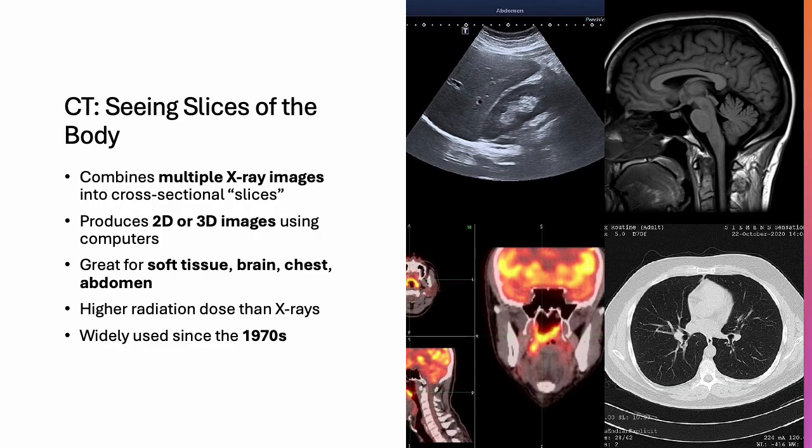CT scans revolutionized imaging by combining multiple X-rays into one detailed image — think of it like slicing a loaf of bread, allowing you to see internal layers clearly. CT is excellent for evaluating internal bleeding, tumors, or stroke, but does come with higher radiation exposure. It produces 2D or 3D images using computers and is great for soft tissues, the brain, chest, or abdomen. CT scanning began to be more widely used in the 1970s.